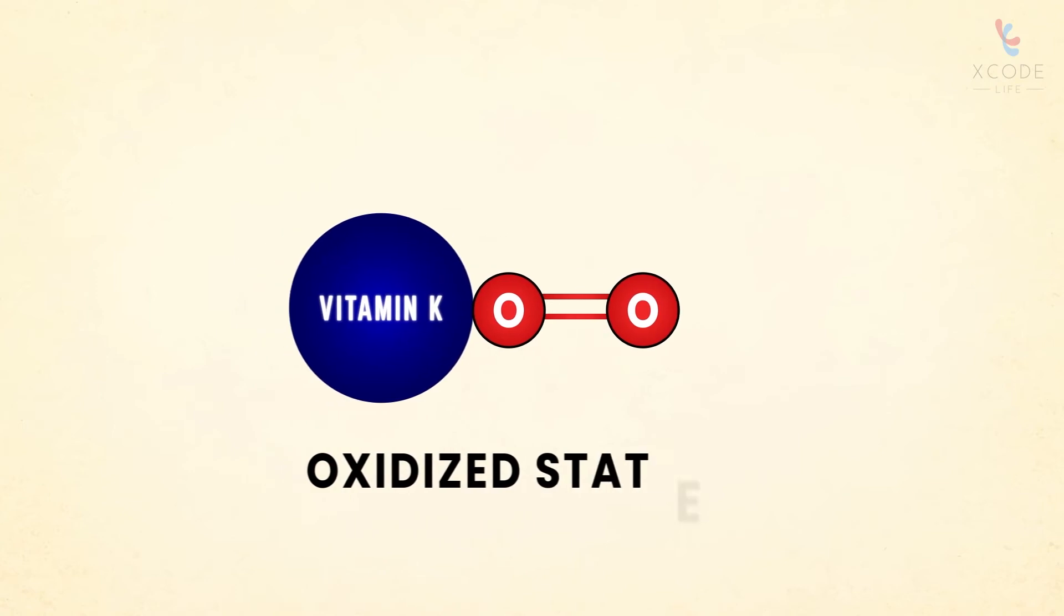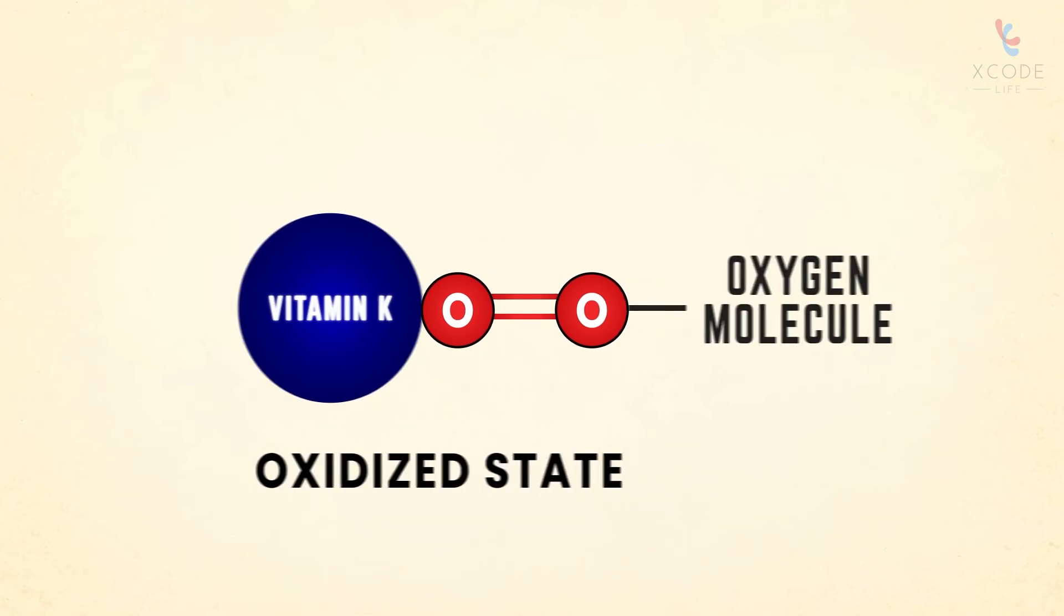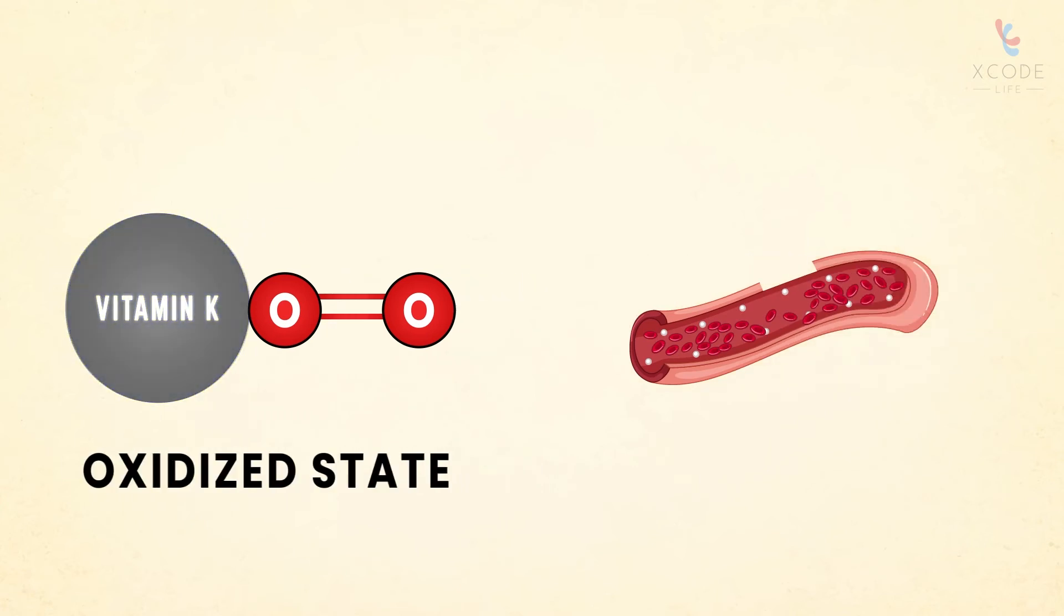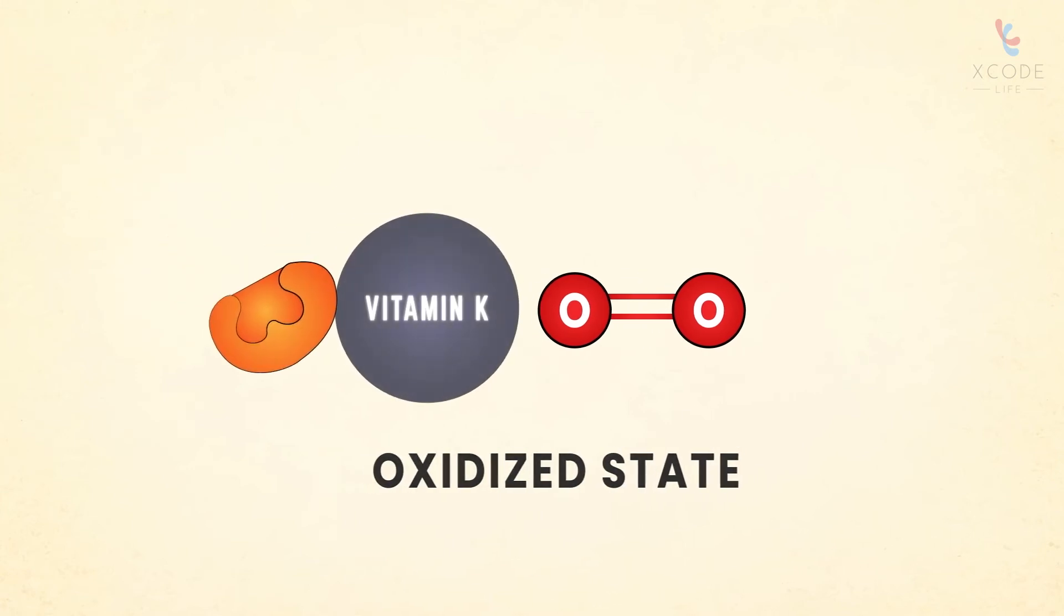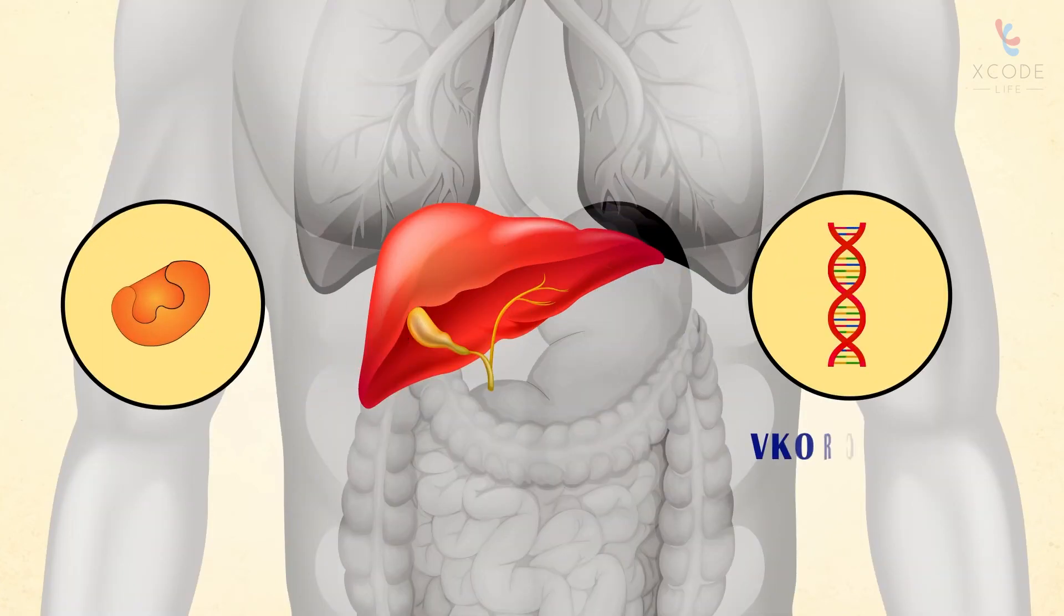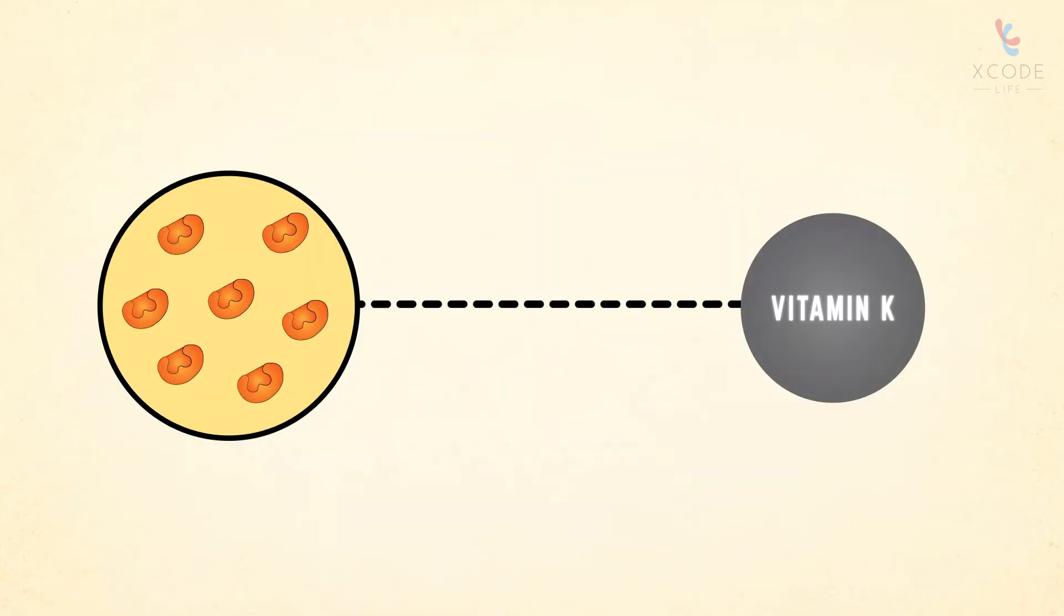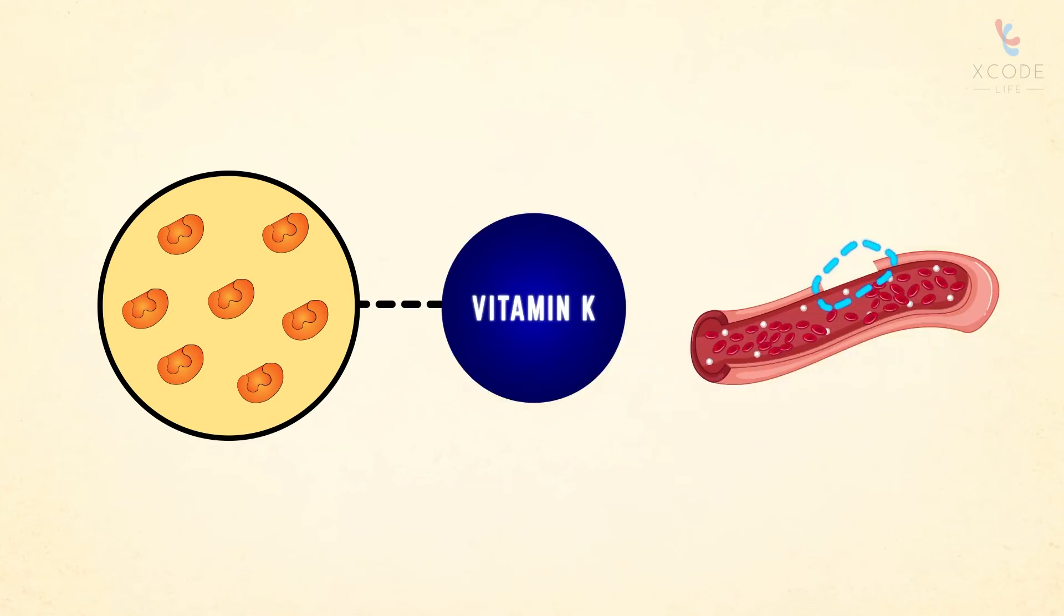Vitamin K in nature is present in an oxidized state—that is, it is attached to an oxygen molecule. In this state, vitamin K is inactive and cannot help with the clotting process. This oxidized form is reduced to the active form by an enzyme called vitamin K reductase. This enzyme is produced by the VKORC1 gene in the liver. Adequate levels of this enzyme are required to activate vitamin K, making it a crucial factor in the blood clotting process.